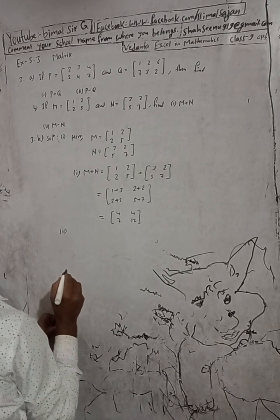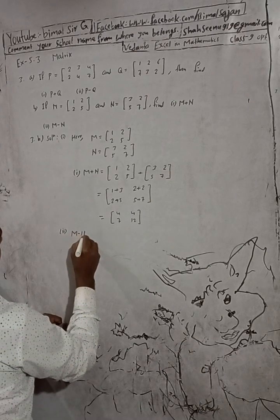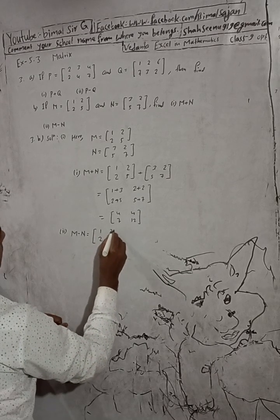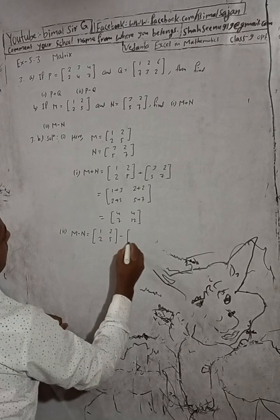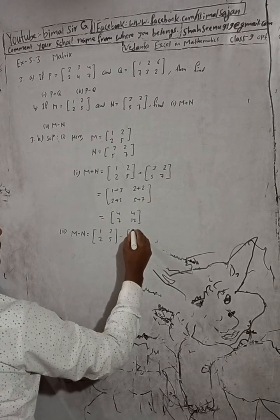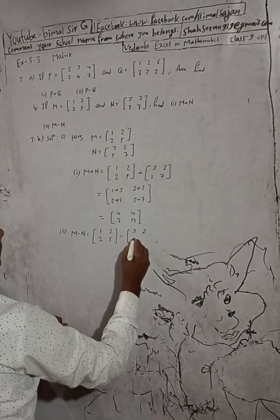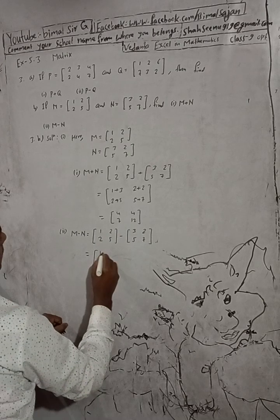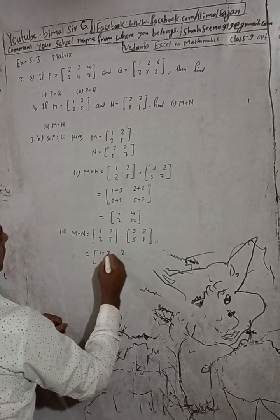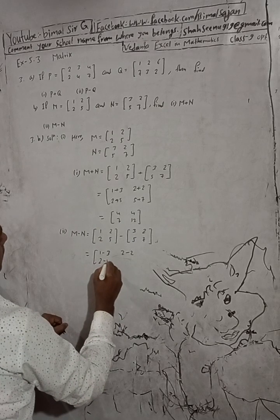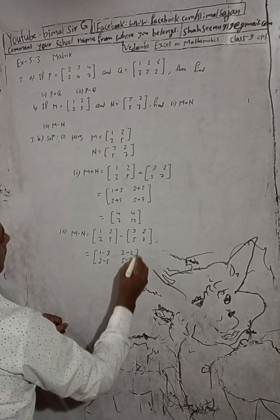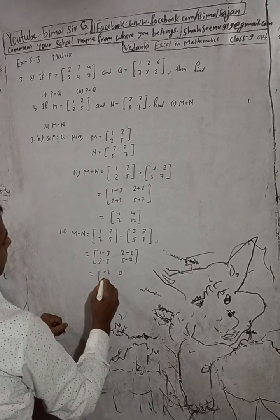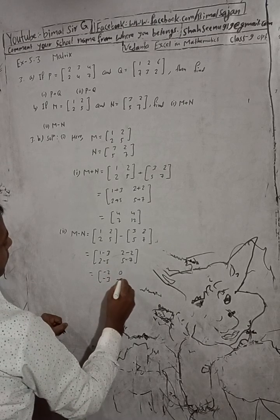YM minus YN equals [1, 2 / 2, 5] minus [3, 2 / 5, 7]. Computing: 1 minus 3, 2 minus 2, 2 minus 5, 5 minus 7. Results: 1 minus 3 is minus 2, 2 minus 2 is 0, 2 minus 5 is minus 3, 5 minus 7 is minus 2. So the result is [-2, 0 / -3, -2].